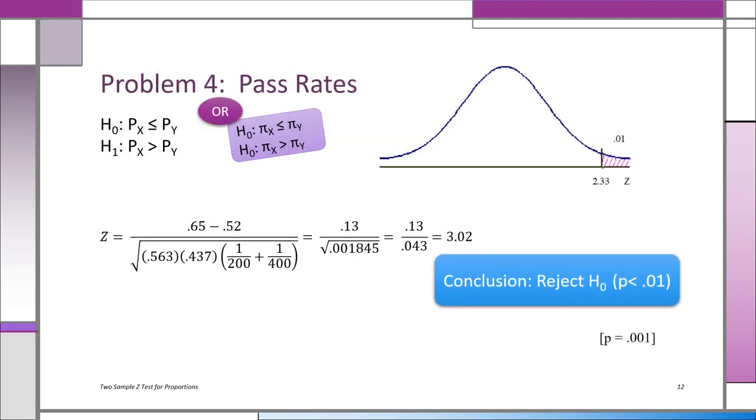Okay, again we have the straw man. H0 is that the pass rate for College X is less than for College Y. Of course, they're hoping to refute that and shoot it down. And if we reject H0, then we're left with H1, which is that X does have a significantly higher pass rate on the bar exam than College Y.